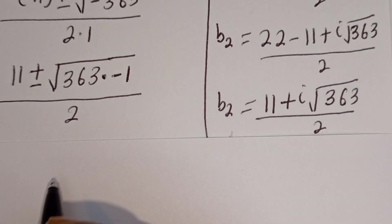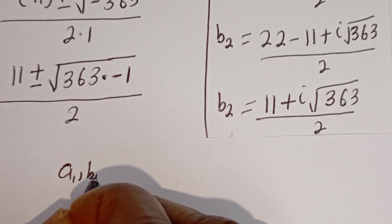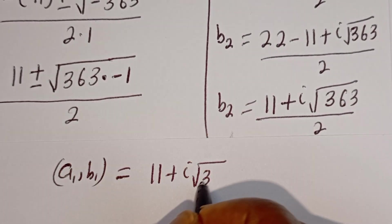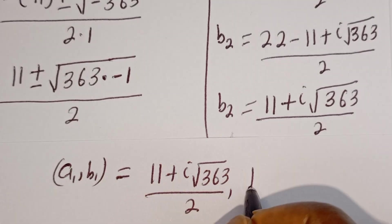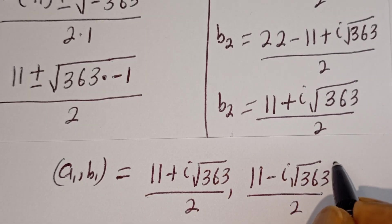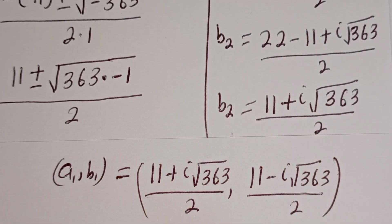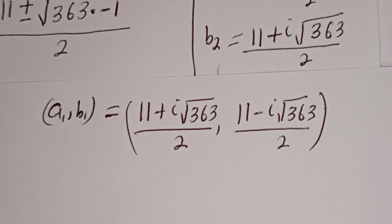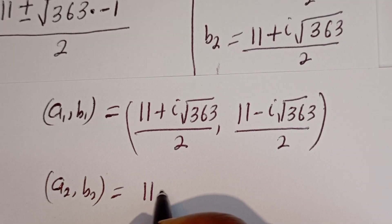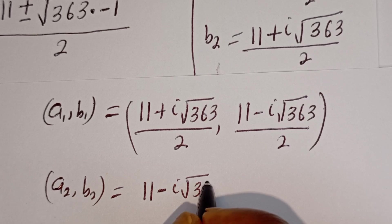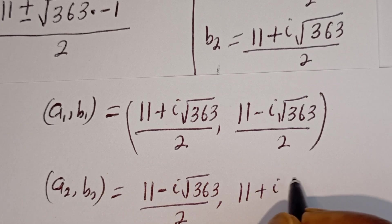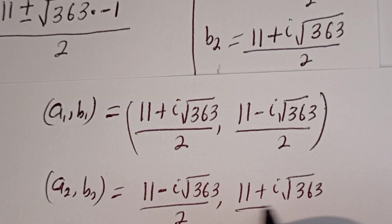Therefore, our final answer is: A1, B1 is equal to 11 plus i square root of 360 divided by 2, comma, 11 minus i square root of 360 divided by 2. And A2, B2 is equal to 11 minus i square root of 360 divided by 2, comma, 11 plus i square root of 360 divided by 2.